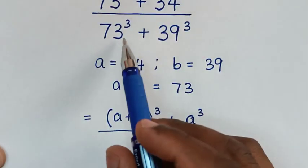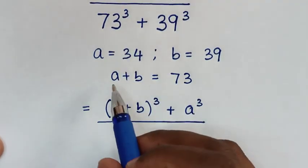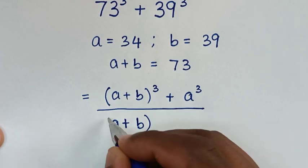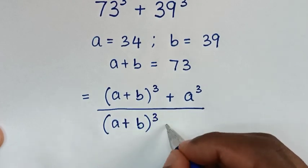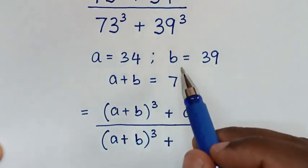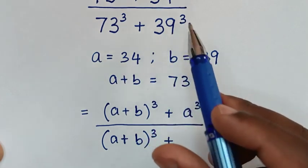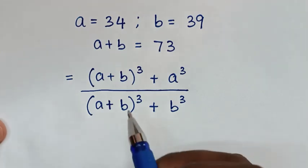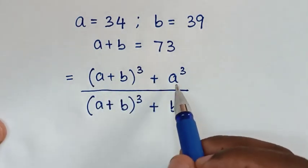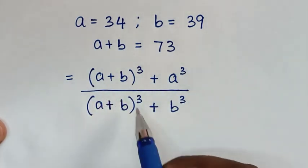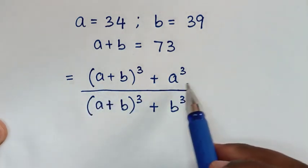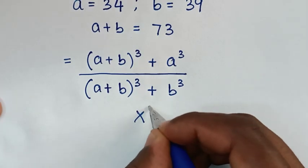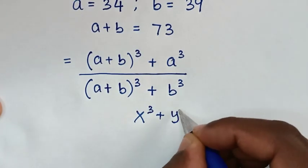— in the denominator, 73 power 3, it will be A plus B, then bracket power of 3, then plus 39, it is this B. So, it will be B power of 3. From here, we have A plus B power of 3 plus A power of 3, and A plus B power of 3 plus B power of 3.